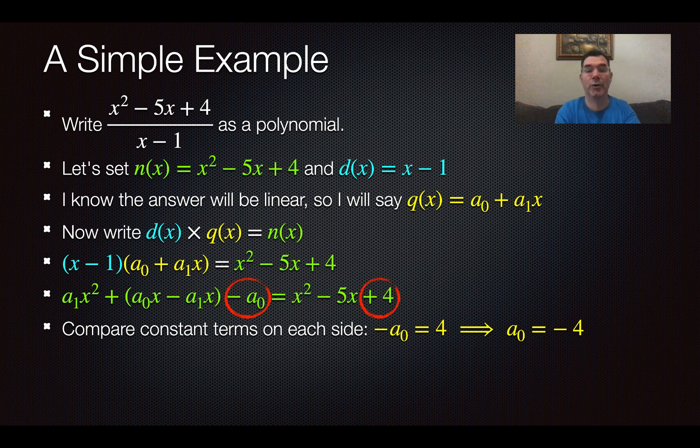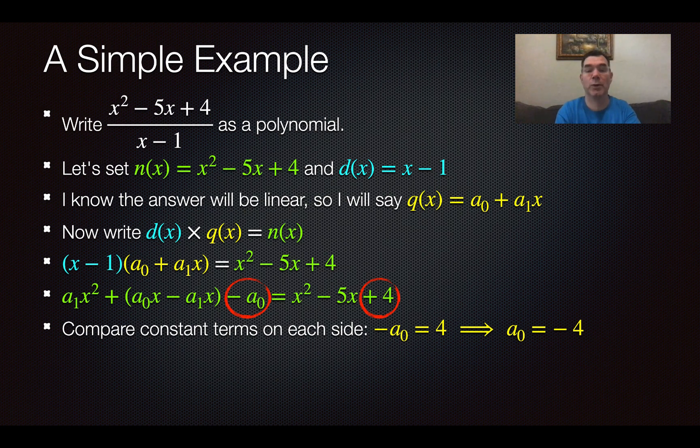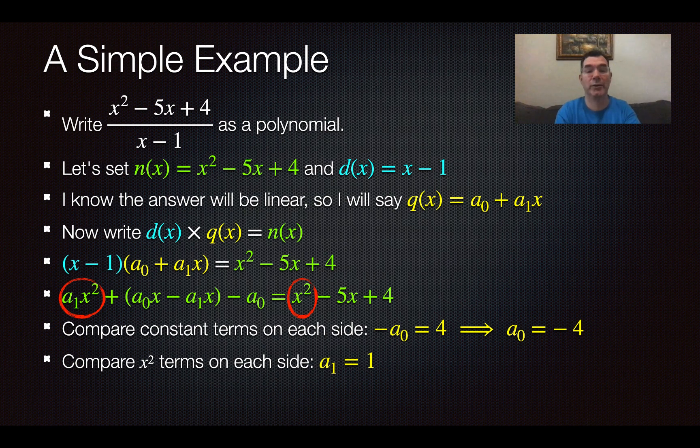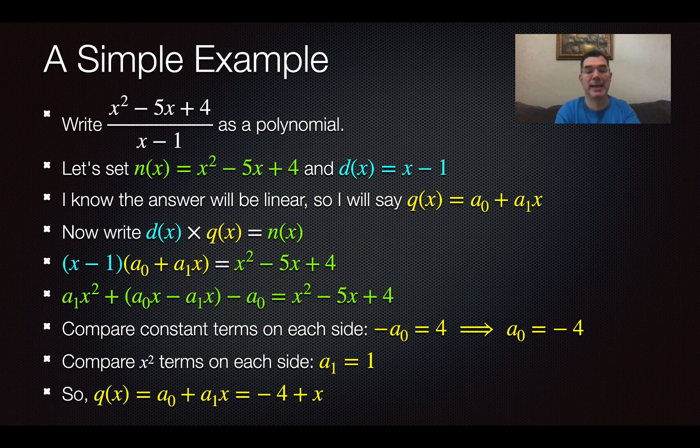If I look at the constant terms, negative a₀ on the left equals positive 4 on the right. That would mean that a₀ equals negative 4. So I have half the job done. I know what my constant term is, it's negative 4. And now if I look at my x² terms, the left has a₁x² and on the right-hand side, I have 1x². So that would mean that a₁ equals 1. So that means that my q(x), that function that I didn't know, is negative 4 plus x.